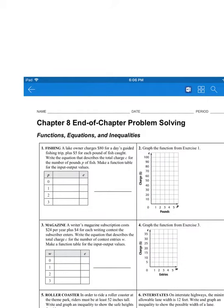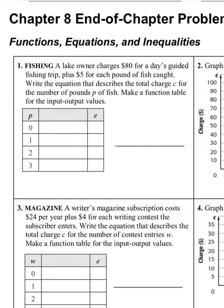Number one says: a lake owner charges $80 a day for a guided fishing trip plus $5 for each pound of fish caught. So it's $80 per day no matter what you catch — no fish, you're still paying that $80. Plus $5 for each pound of fish caught, so that changes depending on the amount of fish caught.